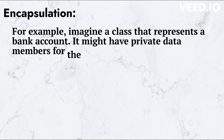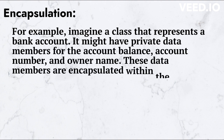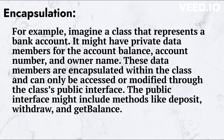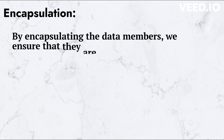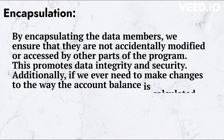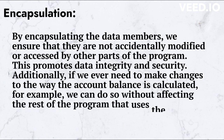For example, imagine a class that represents a bank account. It might have private data members for the account balance, account number, and owner name. These data members are encapsulated within the class and can only be accessed or modified through the class's public interface. The public interface might include methods like deposit, withdraw, and get balance. By encapsulating the data members, we ensure that they are not accidentally modified or accessed by other parts of the program. This promotes data integrity and security.